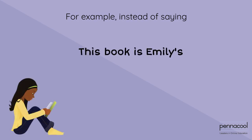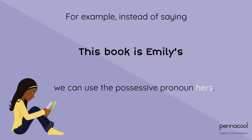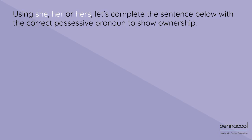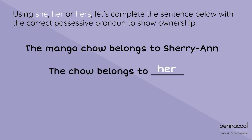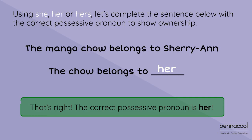For example, instead of saying this book is Emily's, we can use the possessive pronoun hers. So we say, this book is hers. Using she, her, or hers, let's complete the sentence below with the correct possessive pronoun to show ownership. The mango child belongs to Sherian — the child belongs to her. That's right. The correct possessive pronoun is her.